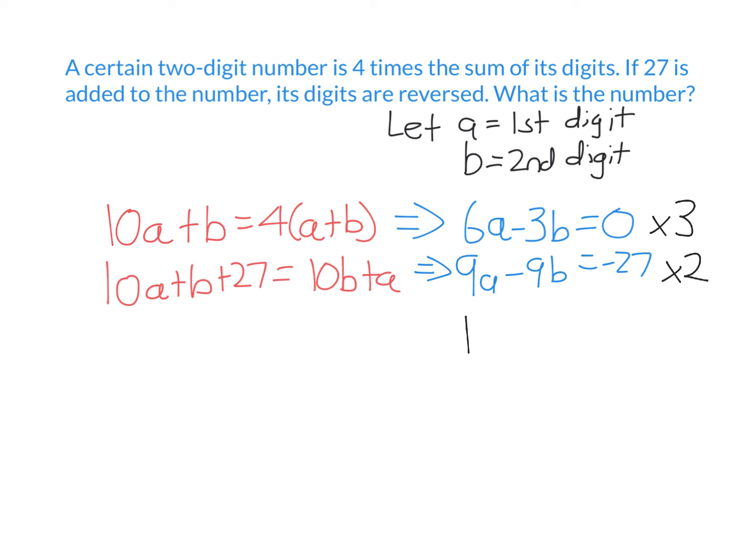Multiplying the top equation by three, I need to multiply everything in the equation by three. Similarly, for the second one, I multiply everything by two.